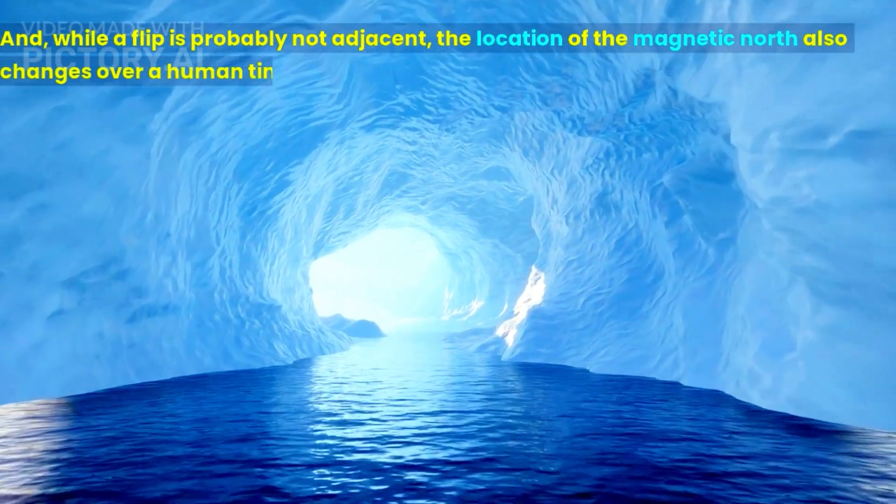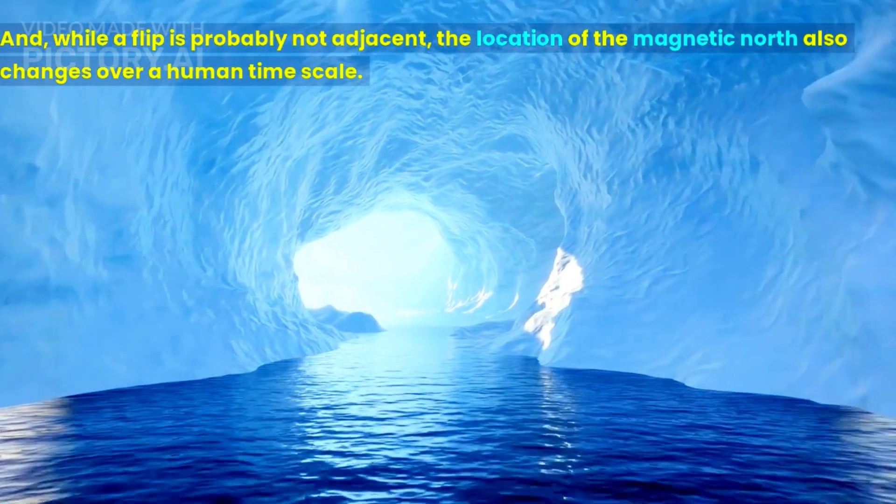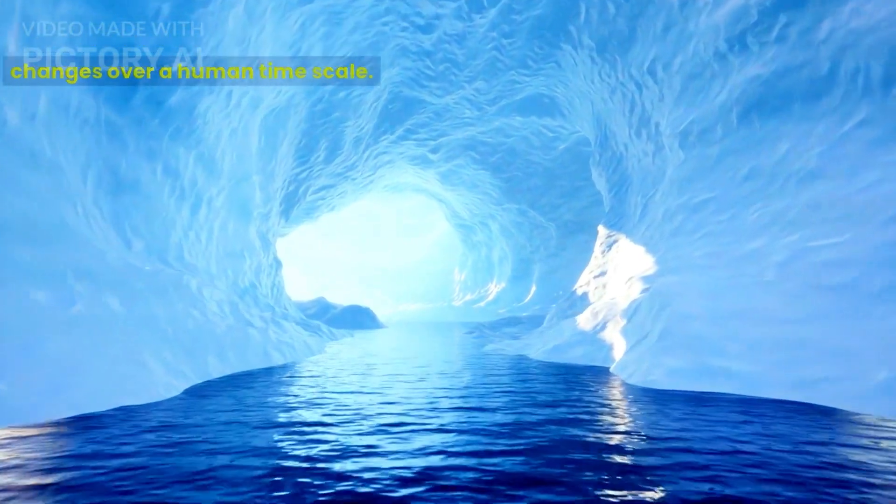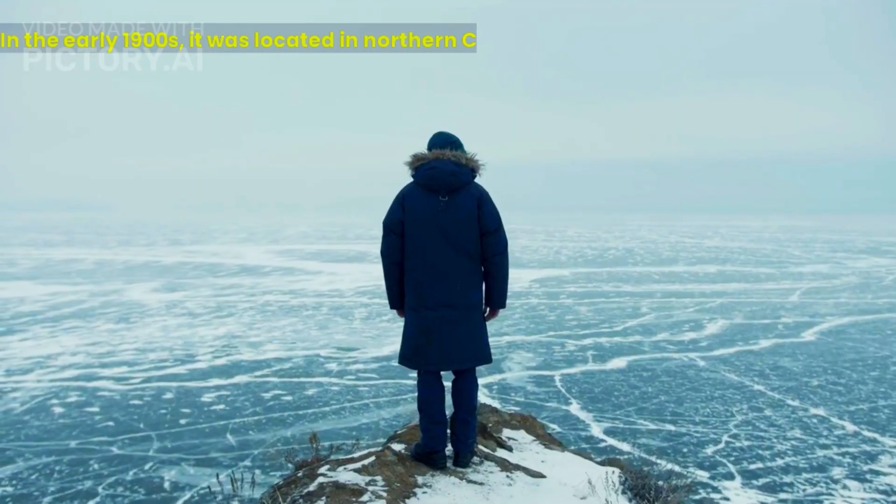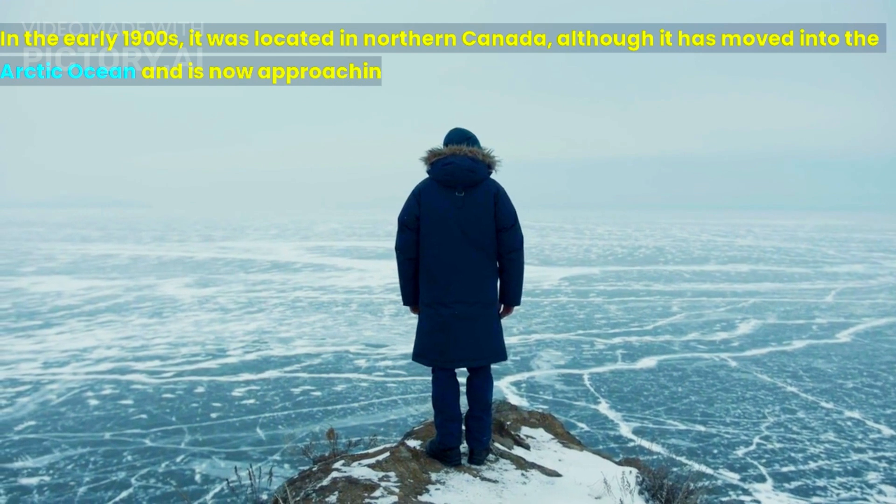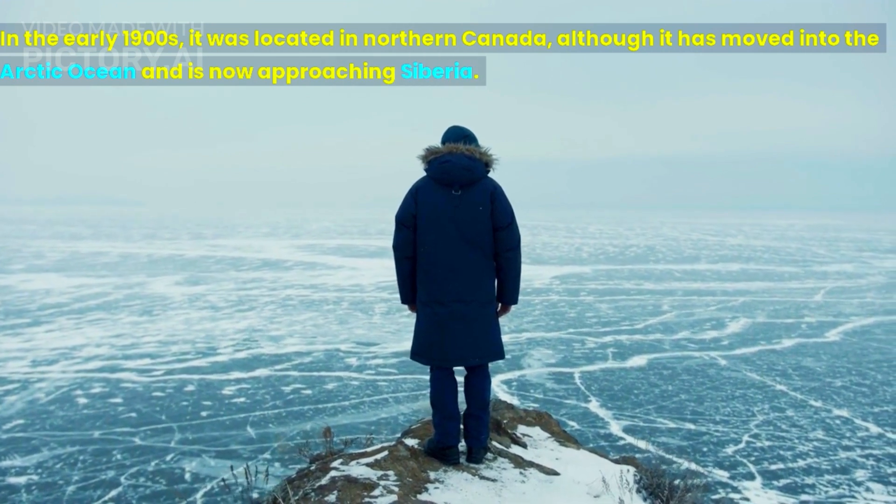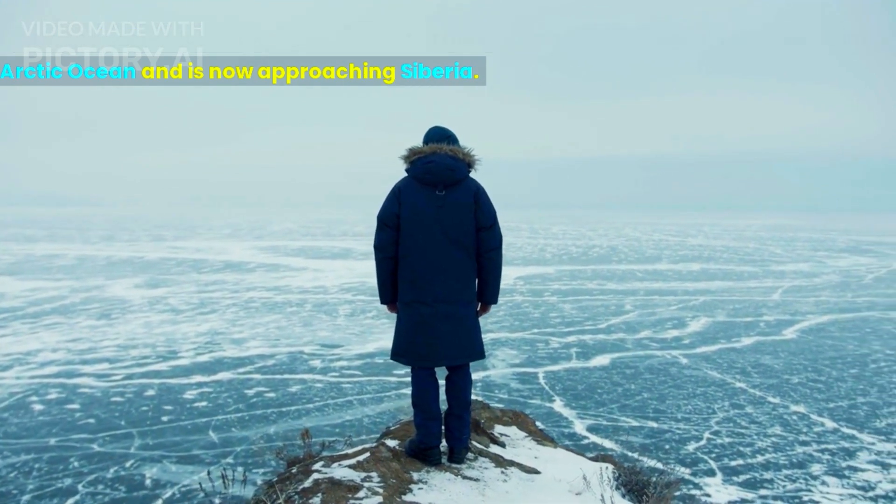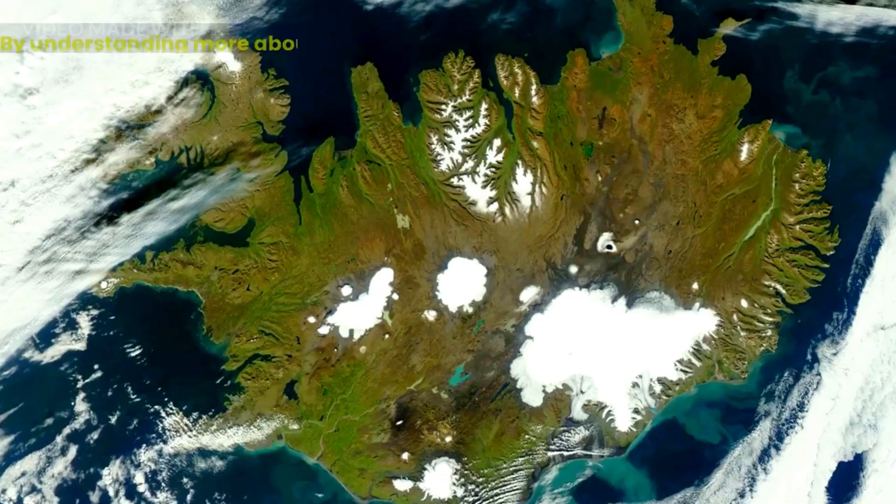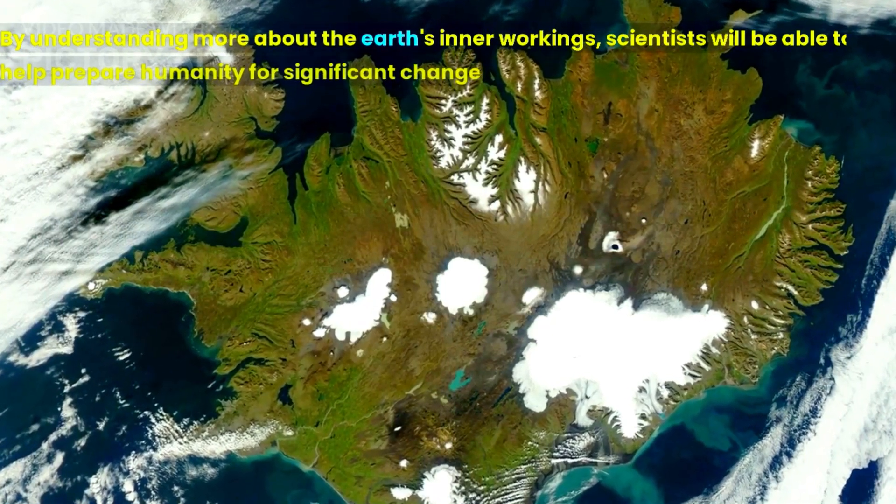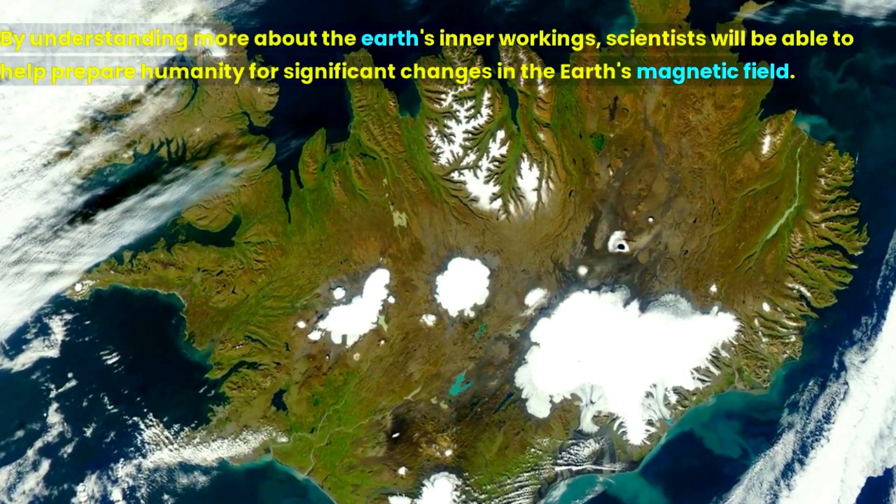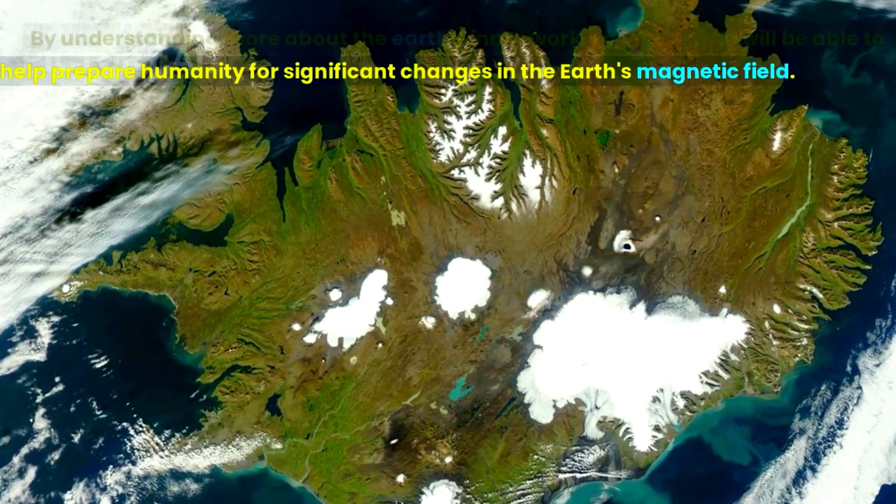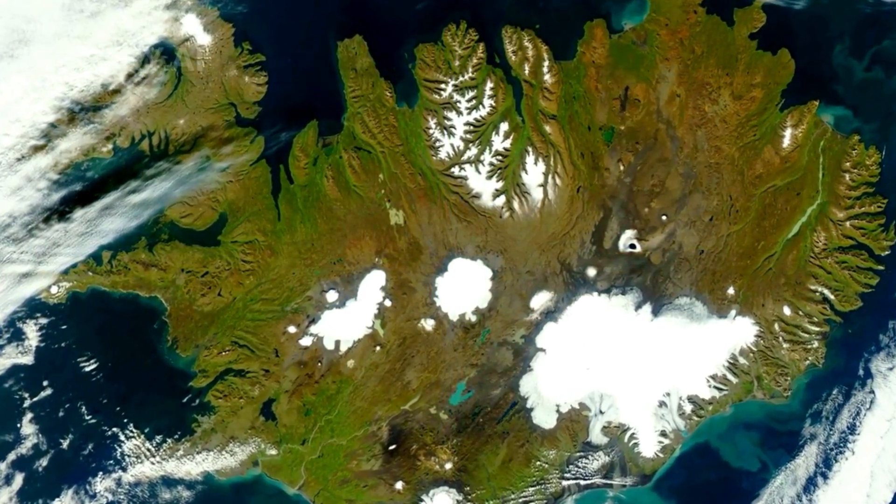And, while a flip is probably not adjacent, the location of the magnetic north also changes over a human time scale. In the early 1900s, it was located in northern Canada, although it has moved into the Arctic Ocean and is now approaching Siberia. By understanding more about the Earth's inner workings, scientists will be able to help prepare humanity for significant changes in the Earth's magnetic field.